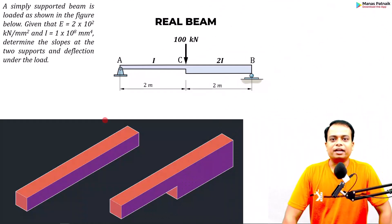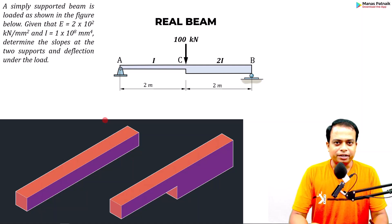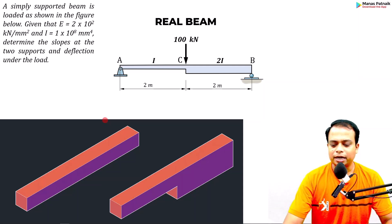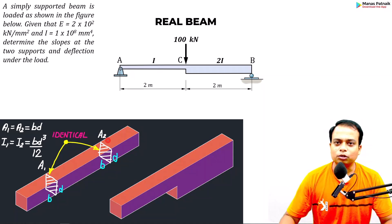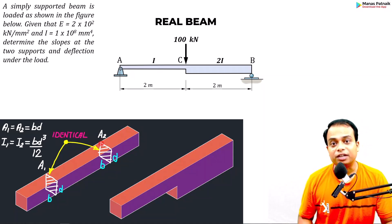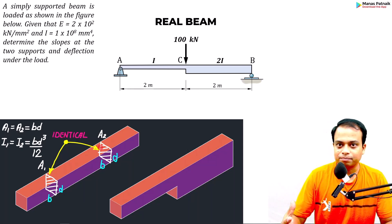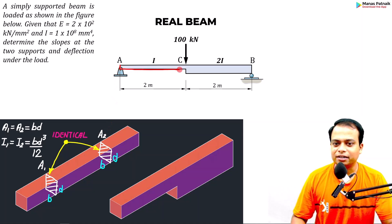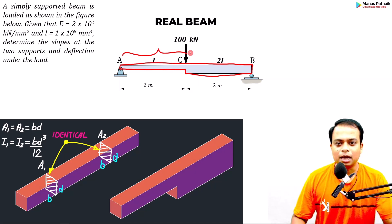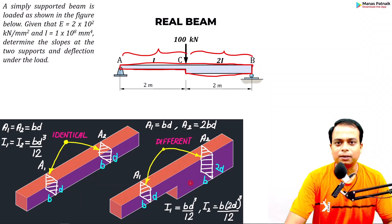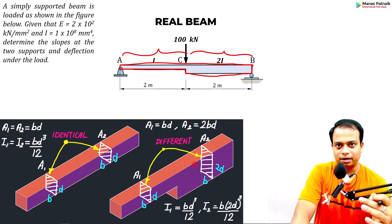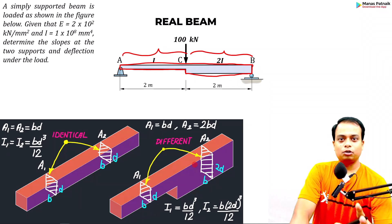Good evening students, this is Manas, your friend and tutor. The problems we did in the previous two examples were where the cross-section of the beam was uniform throughout — same areas A1 and A2, so the same area moment of inertia. But the problem we are going to discuss in today's session is slightly different. Here the cross-section is going to be different for the first half and different for the second half of the beam, so the areas are not identical anymore. This is how we can effectively calculate slopes and deflection using the conjugate beam method.